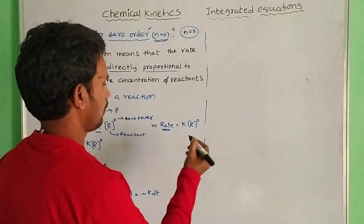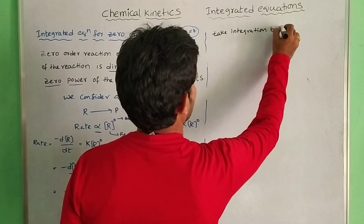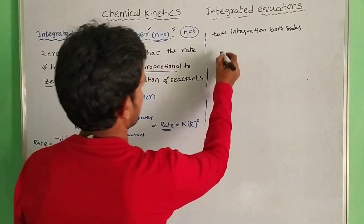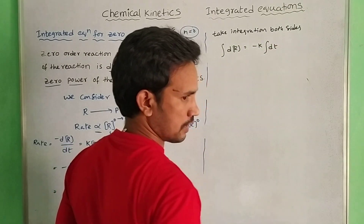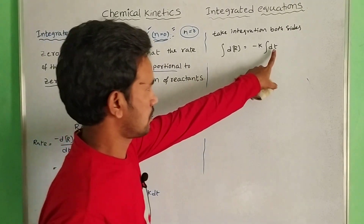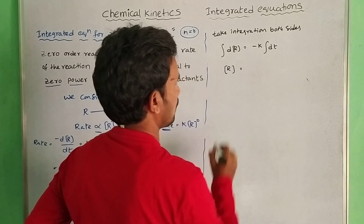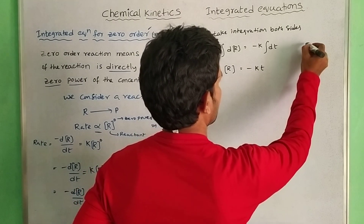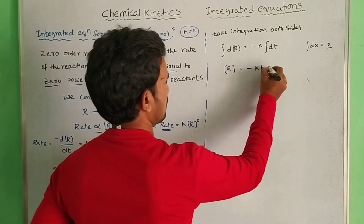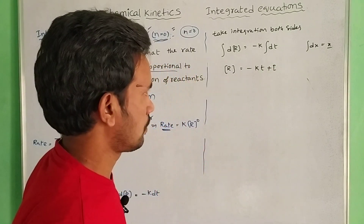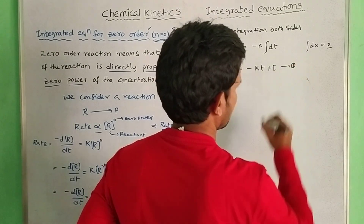Take integration both sides: integration dR equals minus K dt. Since K is a constant, and integration dt equals t, we get R equals minus kt plus I, where I is the integration constant. This is equation number 1.